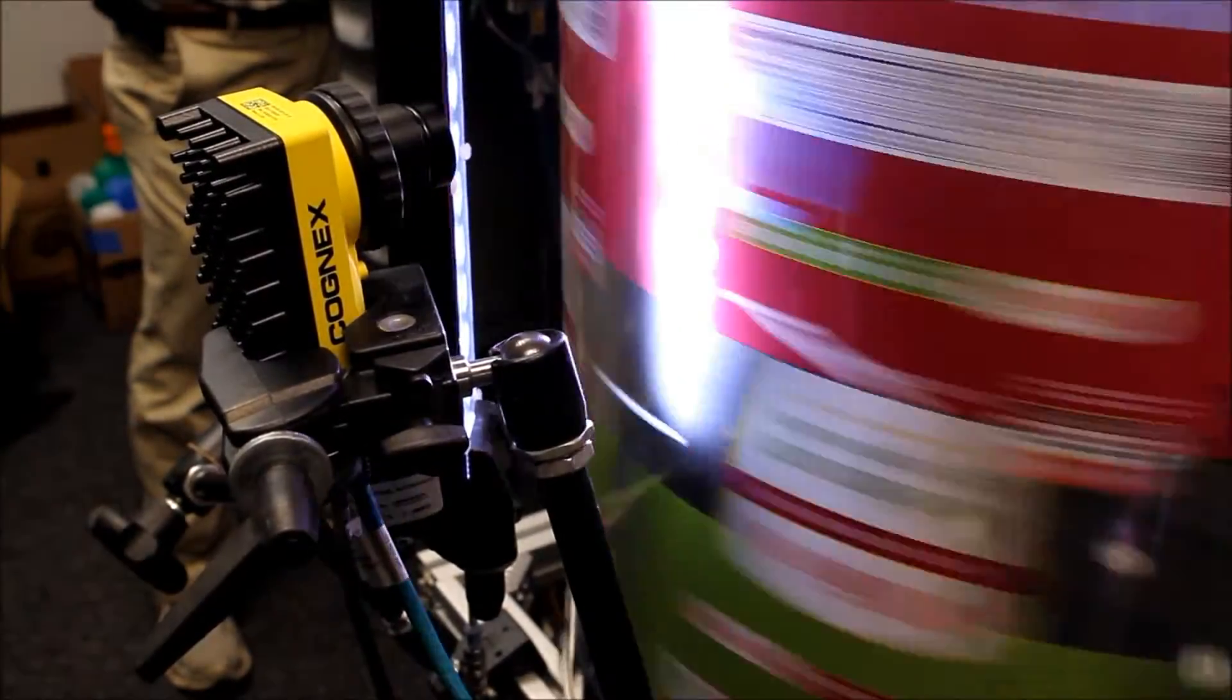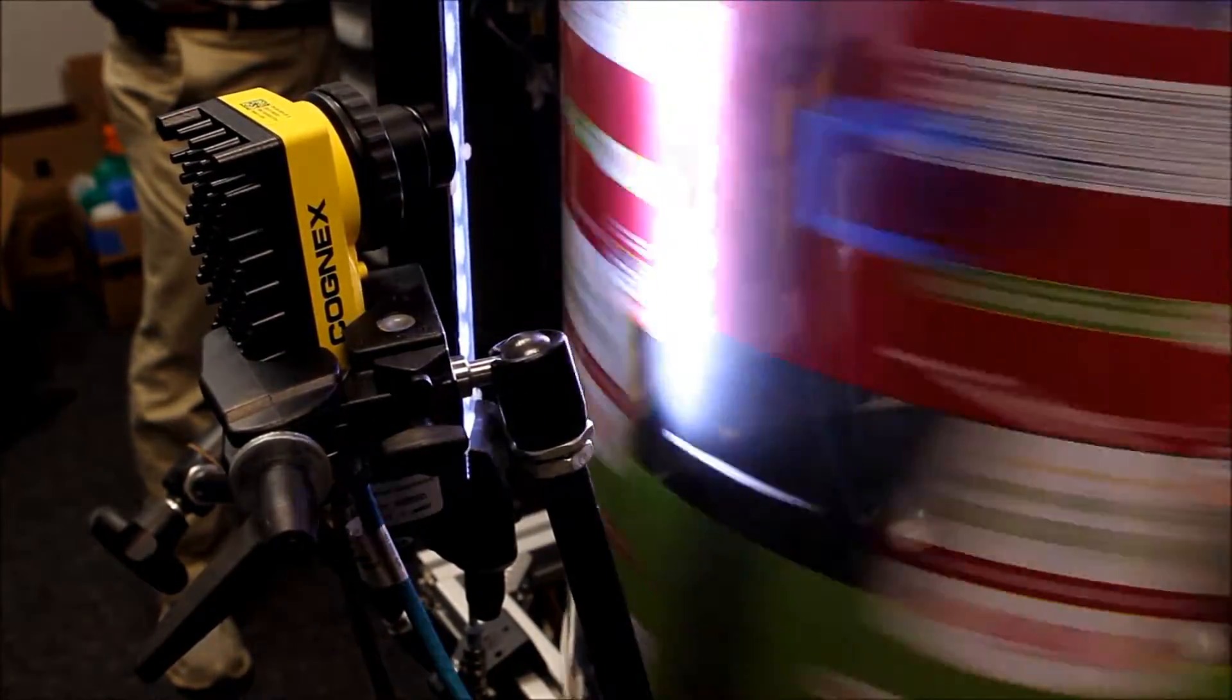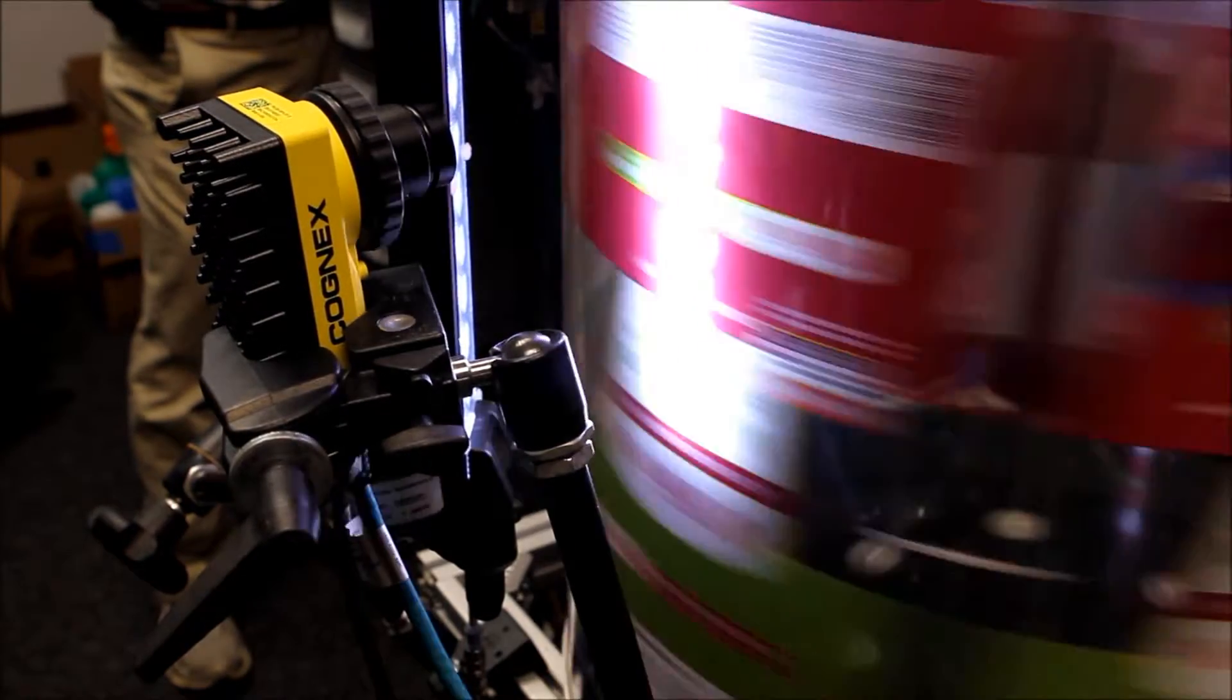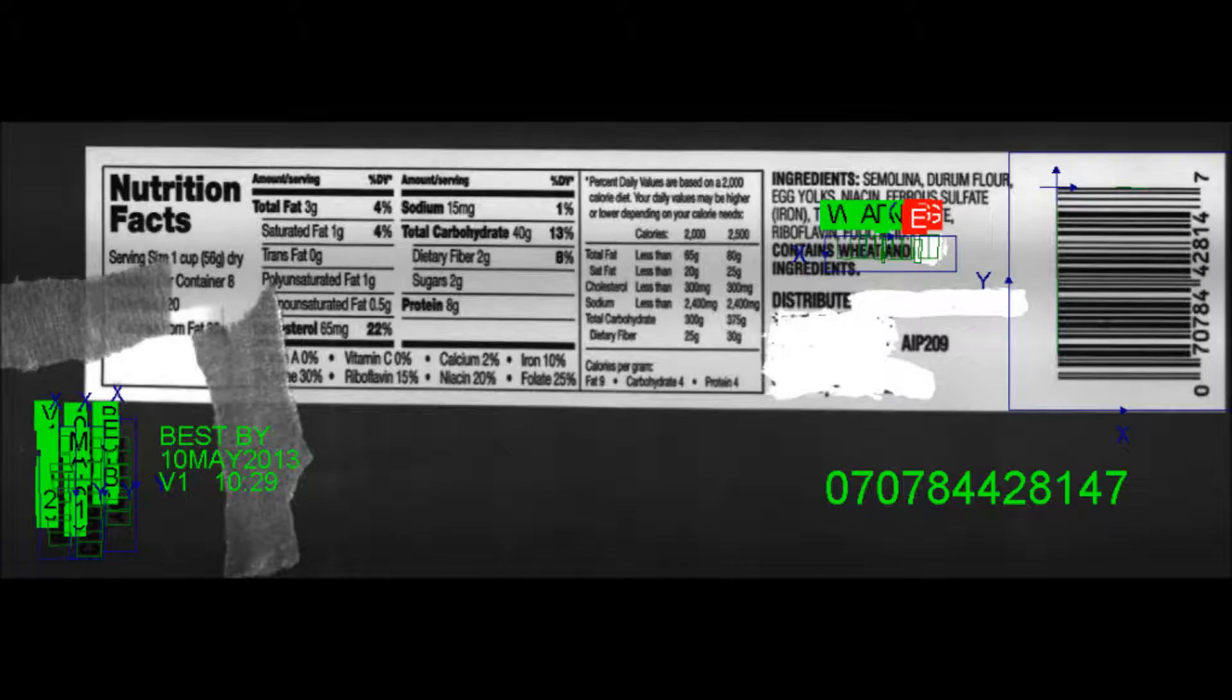The second method of inspection utilizes a line scan camera, which is able to build a high resolution image across the entire label by scanning the label as it passes by.